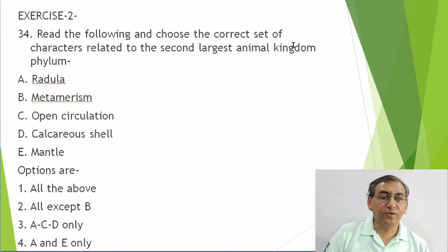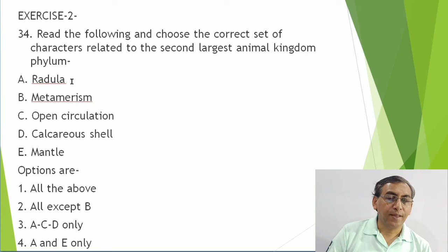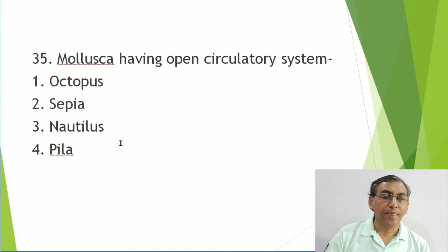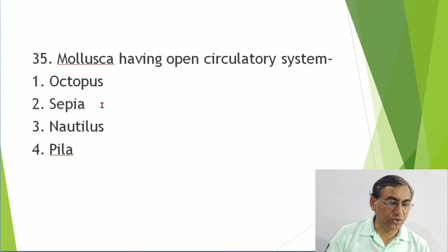For the second largest animal kingdom phylum - Mollusca - the correct set of characters: radula is present, metamaryngium is not present, open circulation - yes, calcareous shell is present, mantle is present. So all except metamaryngium. Non-cephalopod Mollusca like Pila (Gastropoda) have open circulatory systems, while cephalopod molluscs like Octopus, Sepia, and Loligo have closed circulatory systems.